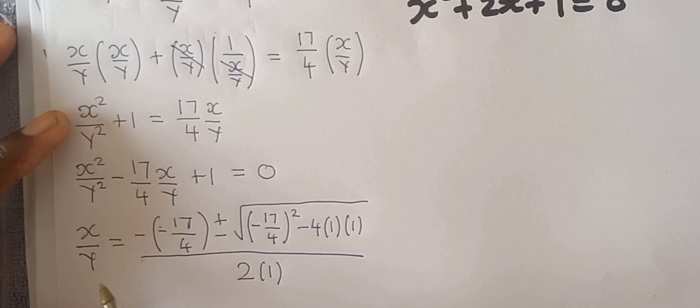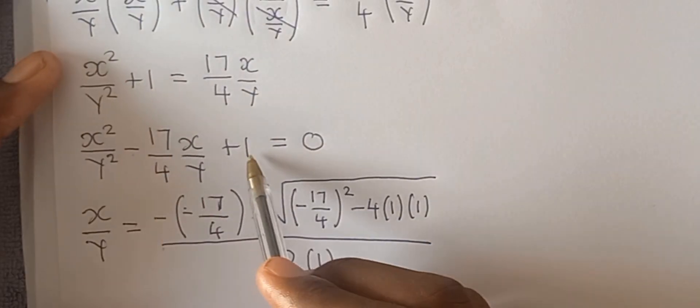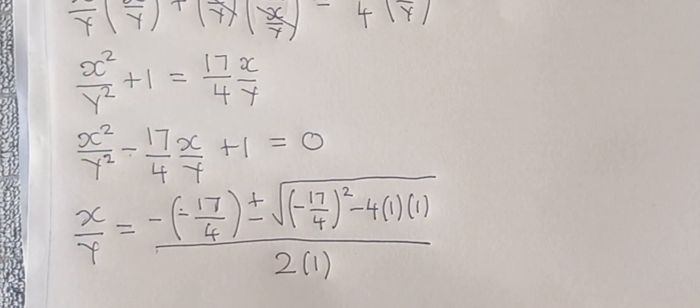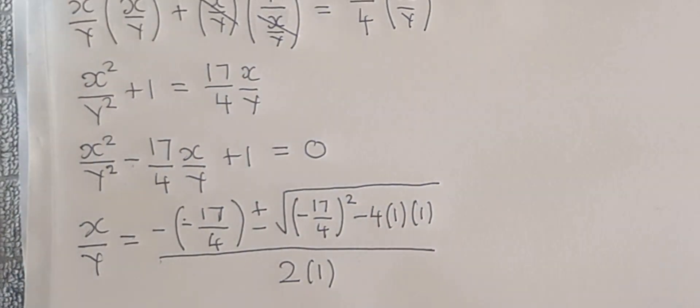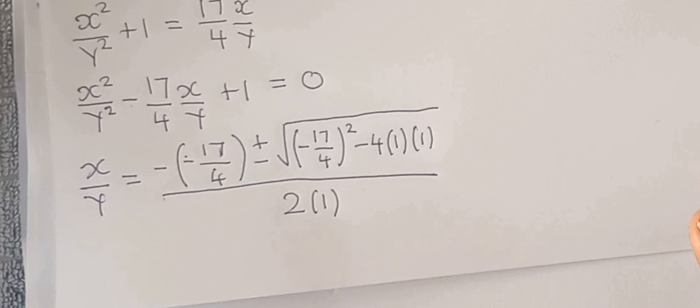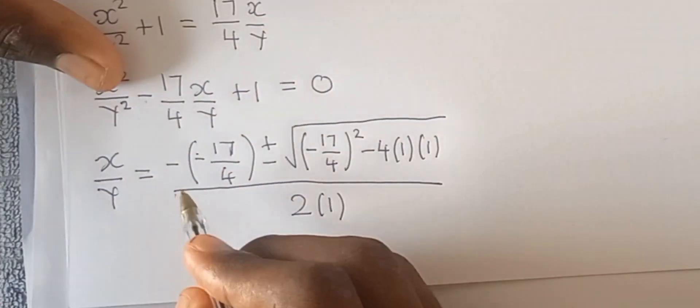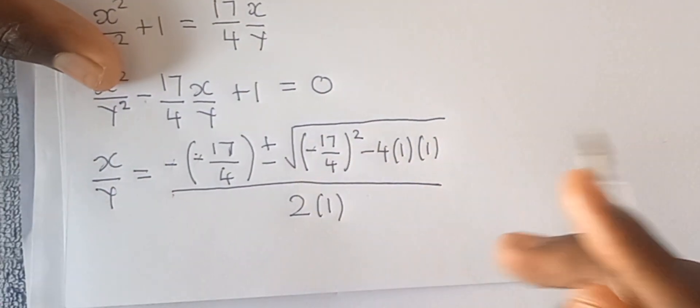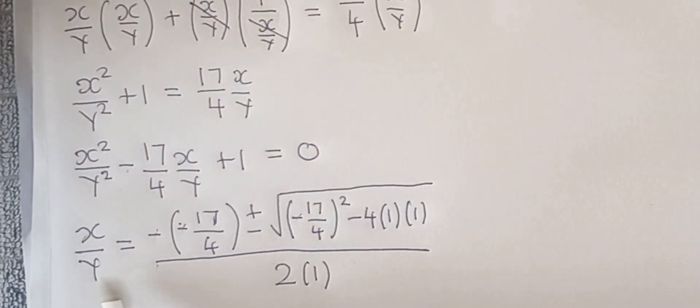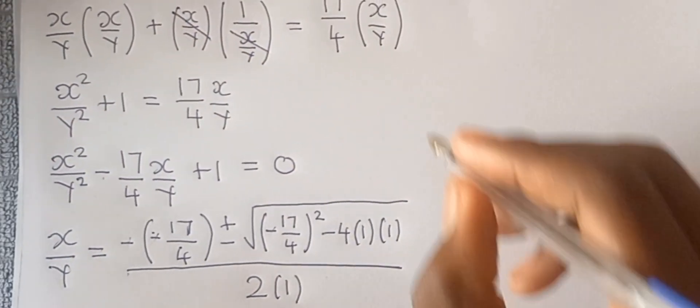So we can use the quadratic formula. Here I use the quadratic formula - this is our B, this is our a. Some of you guys at home can ask why are you taking so long to solve this. I'm just trying to explain to those who don't understand. This is going to cancel and then this one is going to cancel.